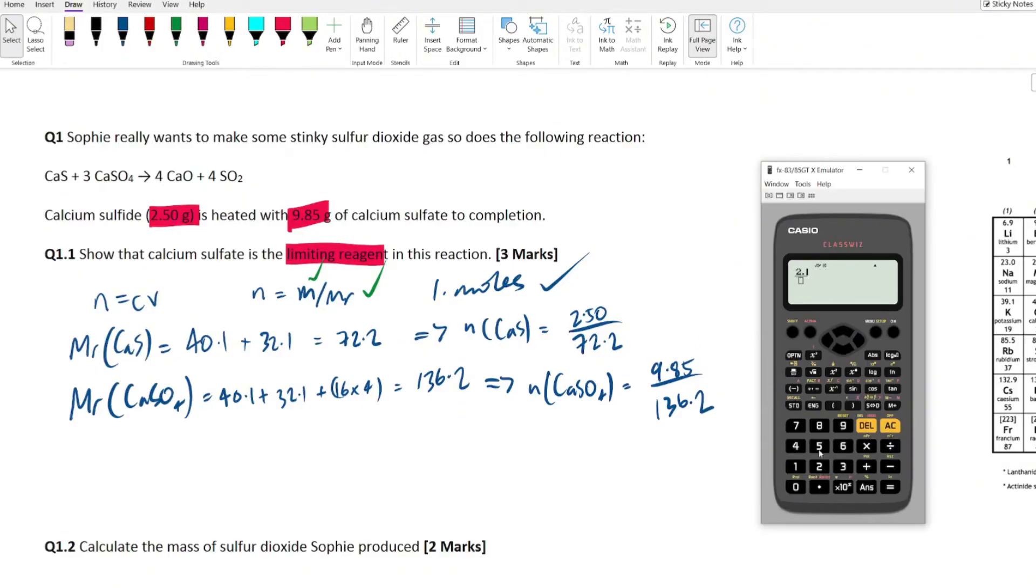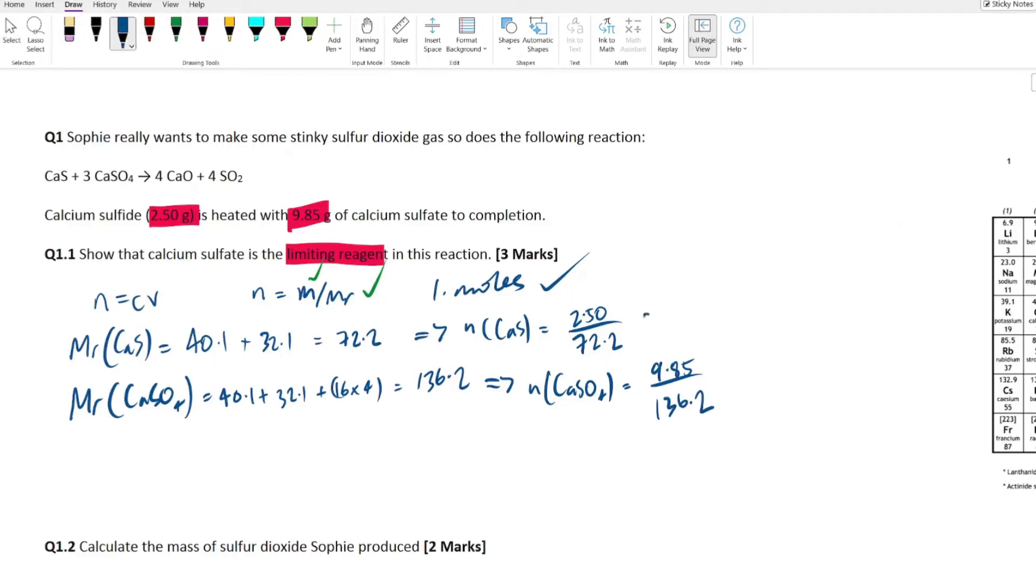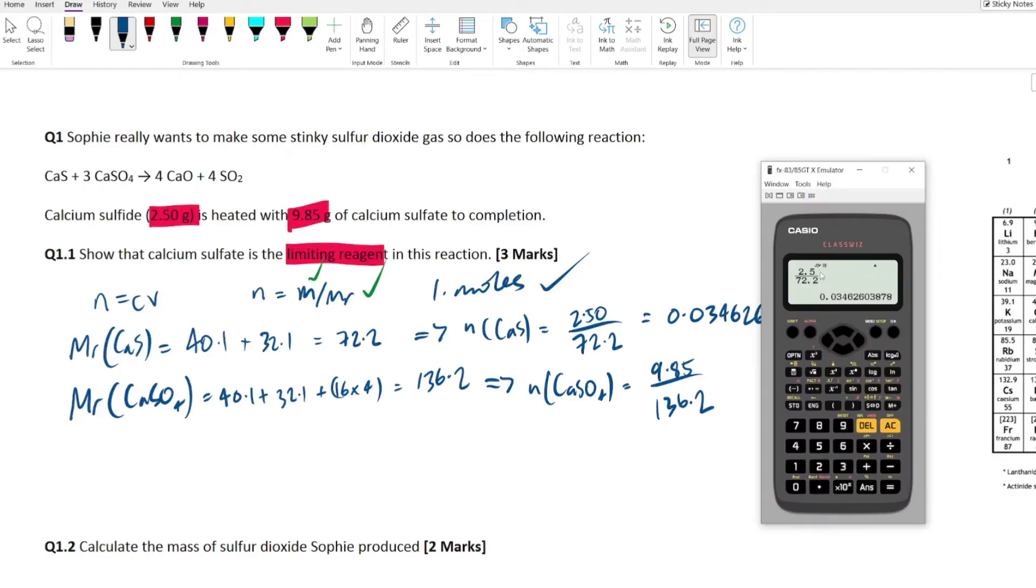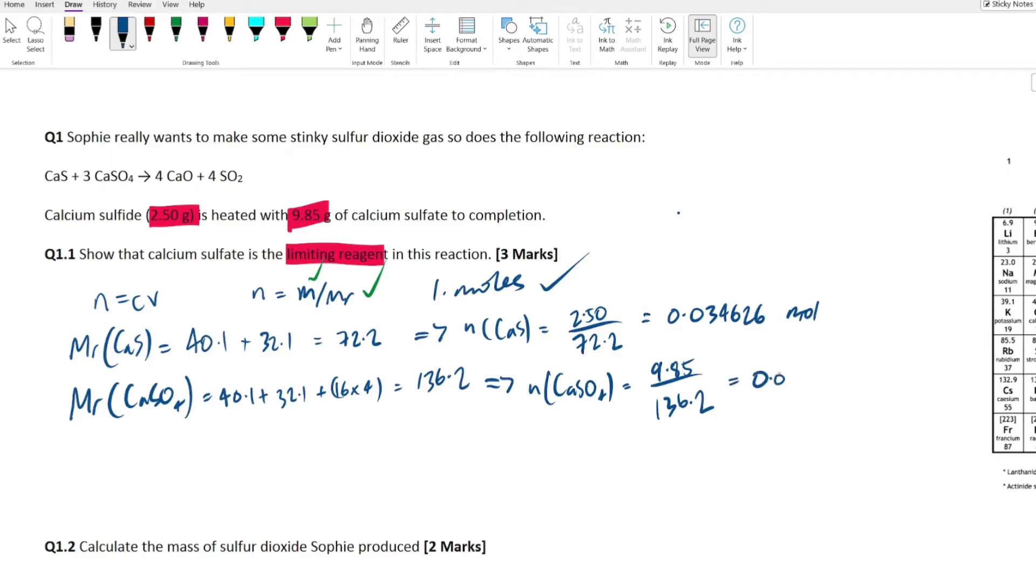All right, so we have our mr right, boom done. We have our mass. So now what we can do is we can work out the moles. I'm going to do that right now and then you're going to see why you want to work out the moles. So then from there the moles of the calcium sulfide equals m over mr. So we've got our mass is 2.5 divided by the mr that we just calculated, 72.2. I'm going to do exactly the same thing for the calcium sulfate. Let's put the moles calcium sulfate equals. We've got a mass of 9.85 divided by the mr which is 136.2.